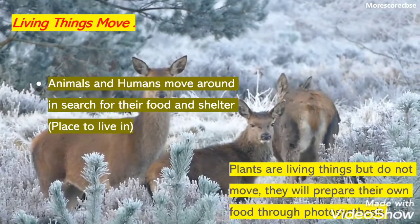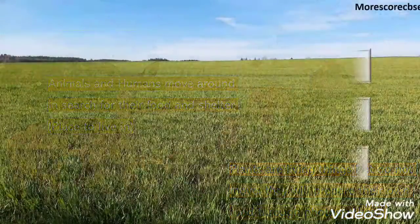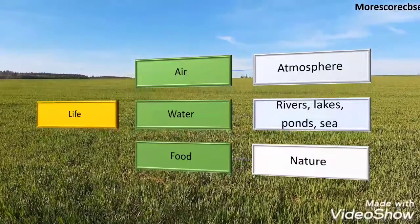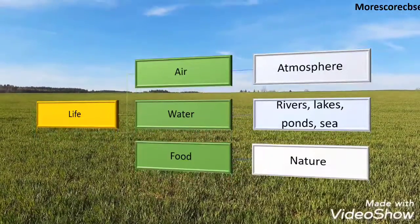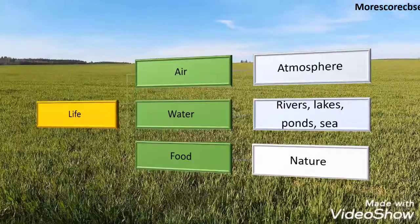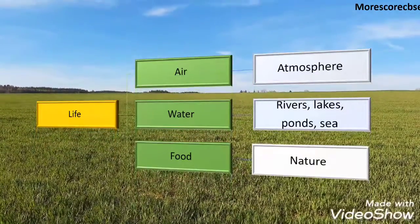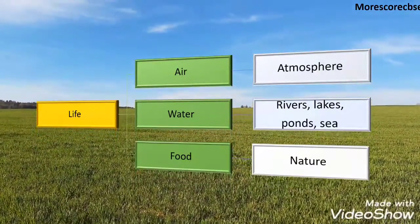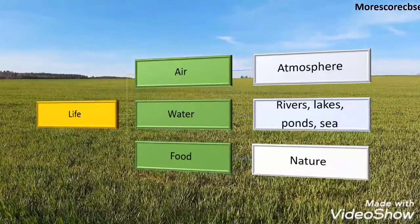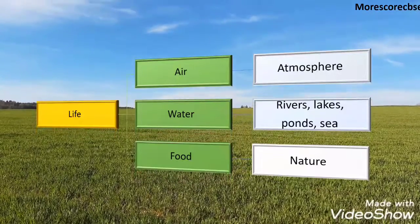Instead, they prepare their own food through photosynthesis. The second major characteristic is living things need air and water. Living things take in oxygen from the atmosphere. Water is a major proportion in all living things and is present in rivers, lakes, and seas. Living things also get food from nature, and food is converted into nutrients that give energy to the body.